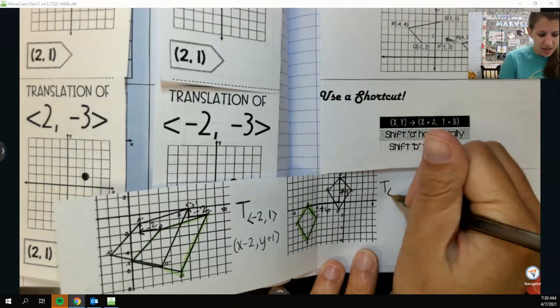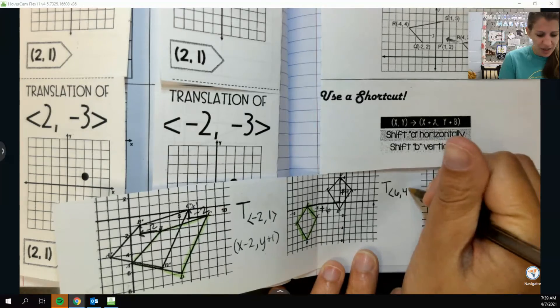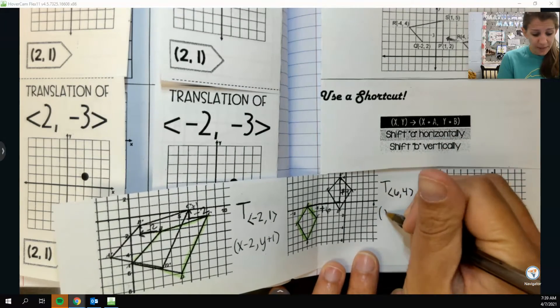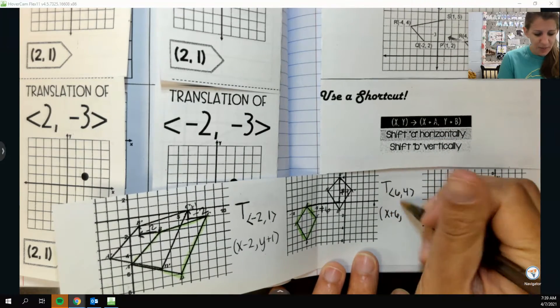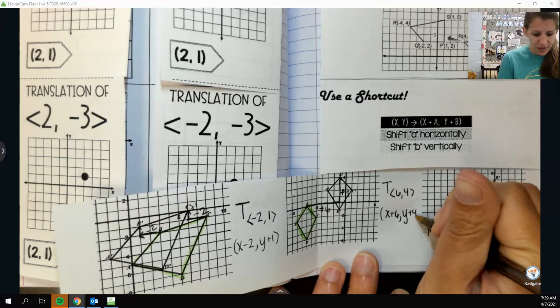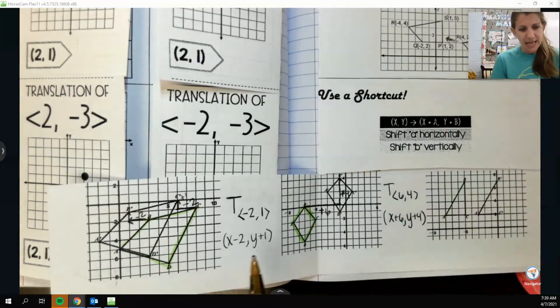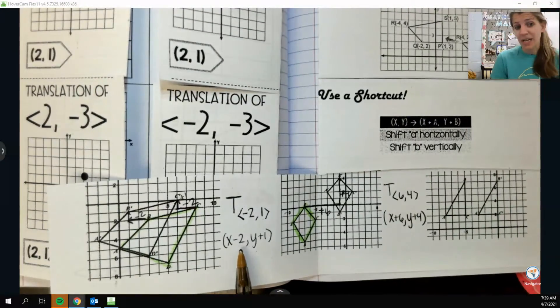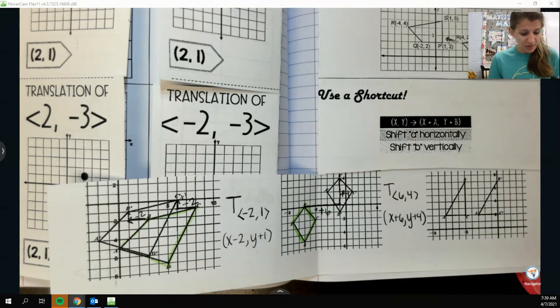Because I went forward 6, up 4, both things are positive, like right and up. So I would do T subscript 6, 4, or x plus 6, because it's positive, and y plus 4, because it's positive. And I guess I didn't say that over here. I did x minus 2 because it was negative. So hopefully that makes sense.